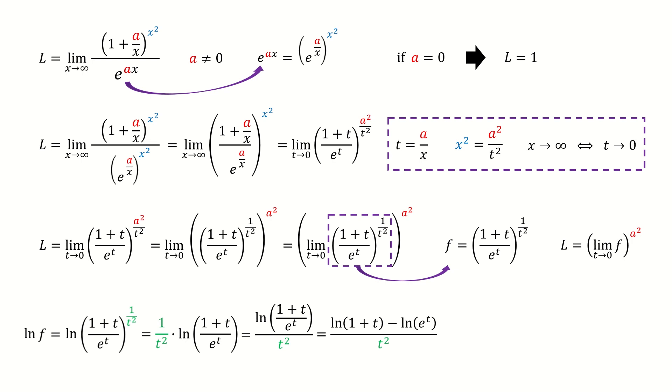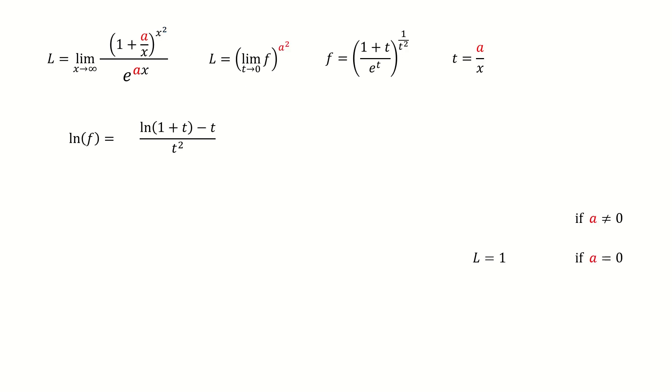Next, we write the numerator in this way. The second term equals t. I'll copy them here. Now we take the limit on both sides.